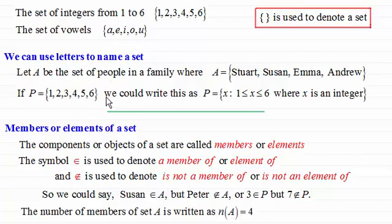And finally, the number of members of a set A is written as n. And then in brackets here, we write whatever set we're talking about. So in this case, set A. And so the number of members or elements in set A equals four. As you can see here, the four people. And the number in set P is equal to six.